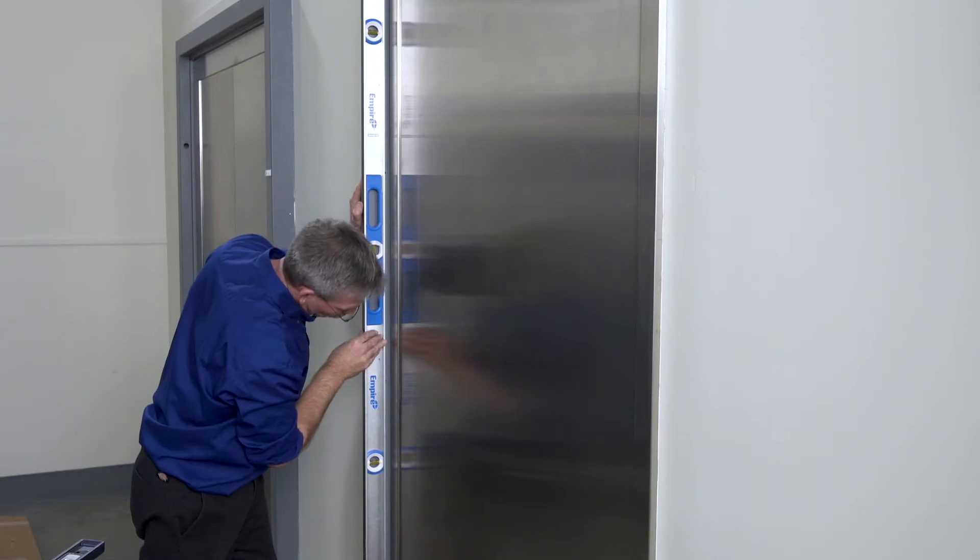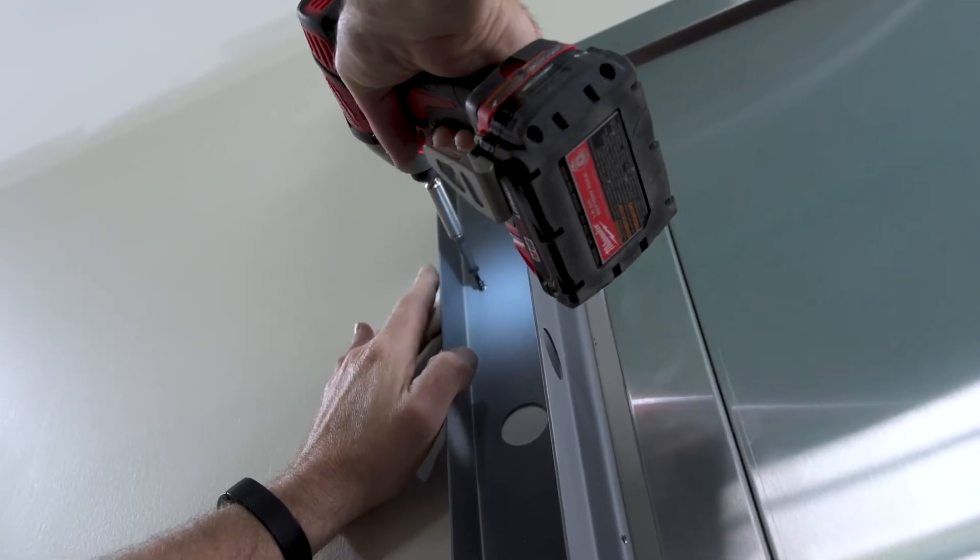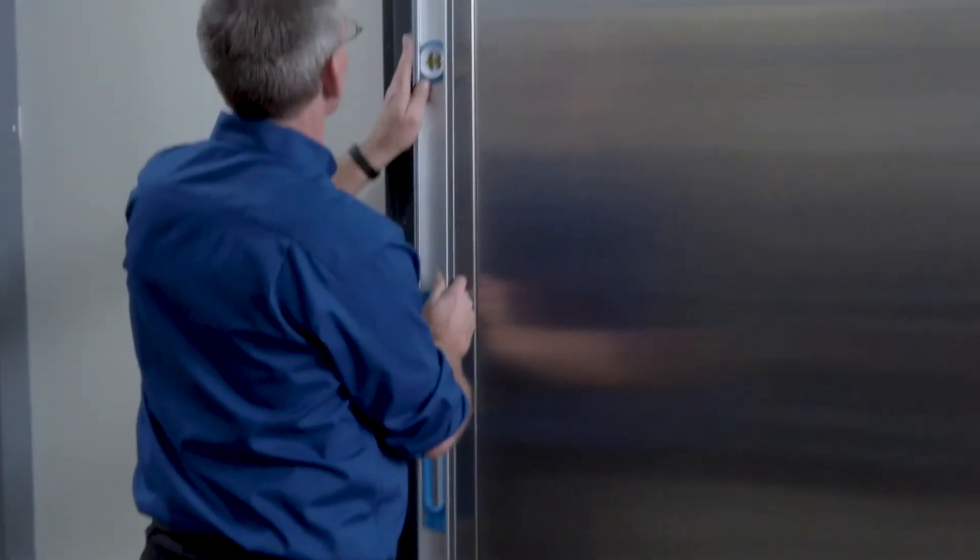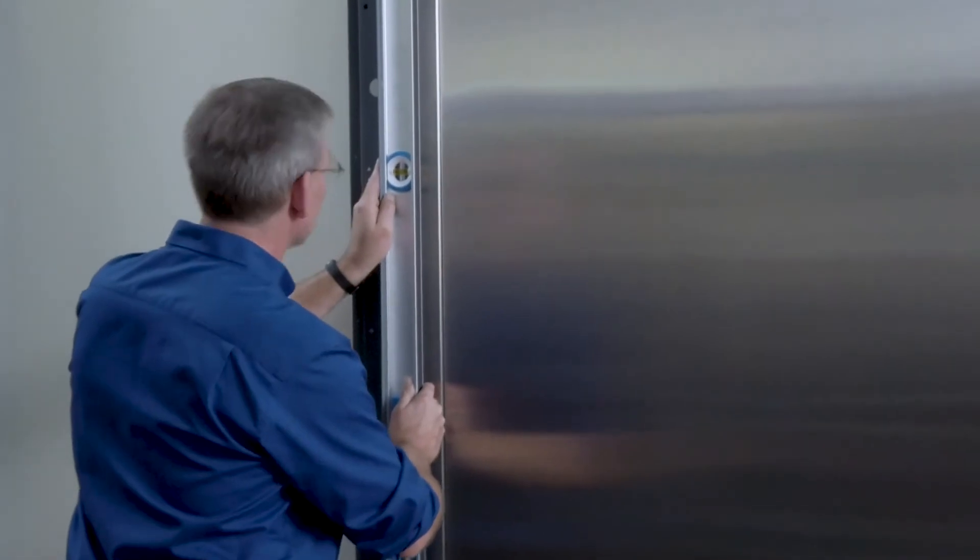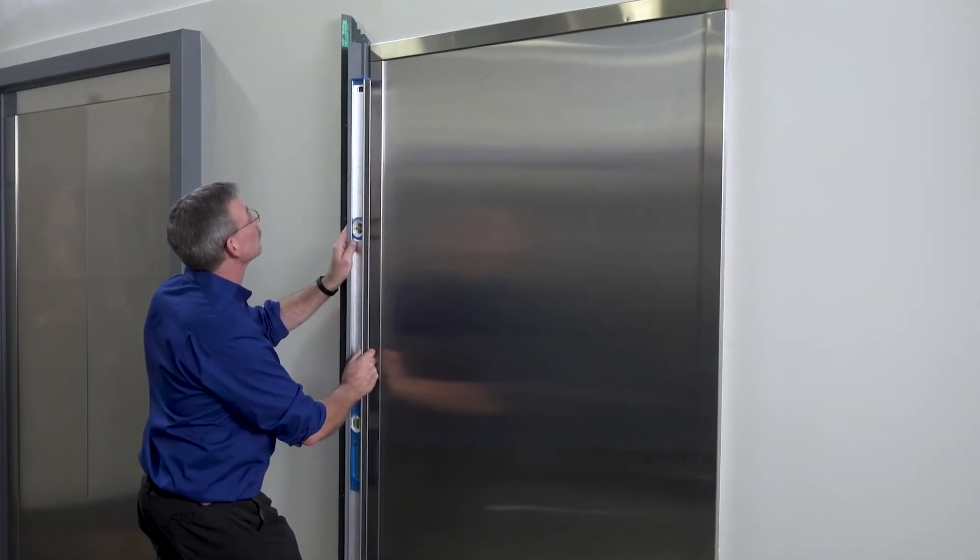Ensure that it is level. Then, install with six screws, using holes on both sides of the sub buck. Do not place all of the screws. Adjustments may need to be made to make sure each piece is plumb to the wall. This will make it easier to verify squareness of the finished shell.